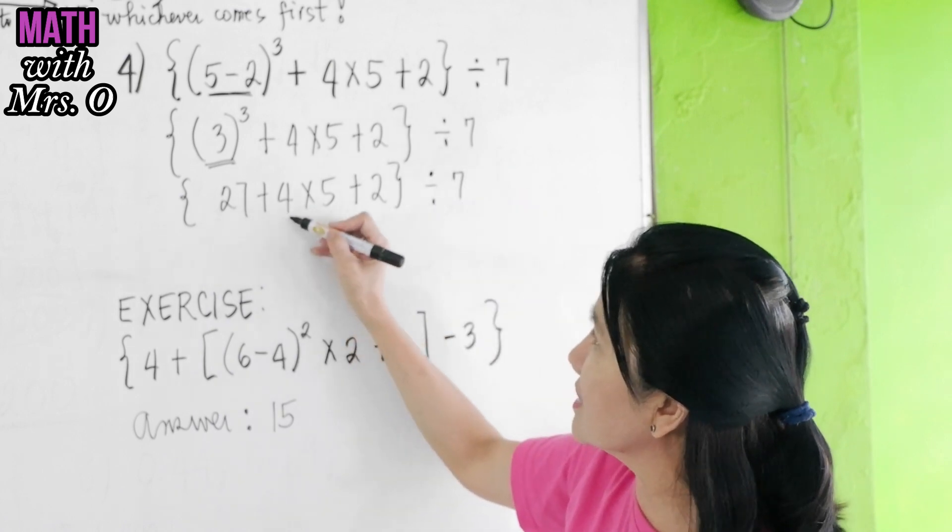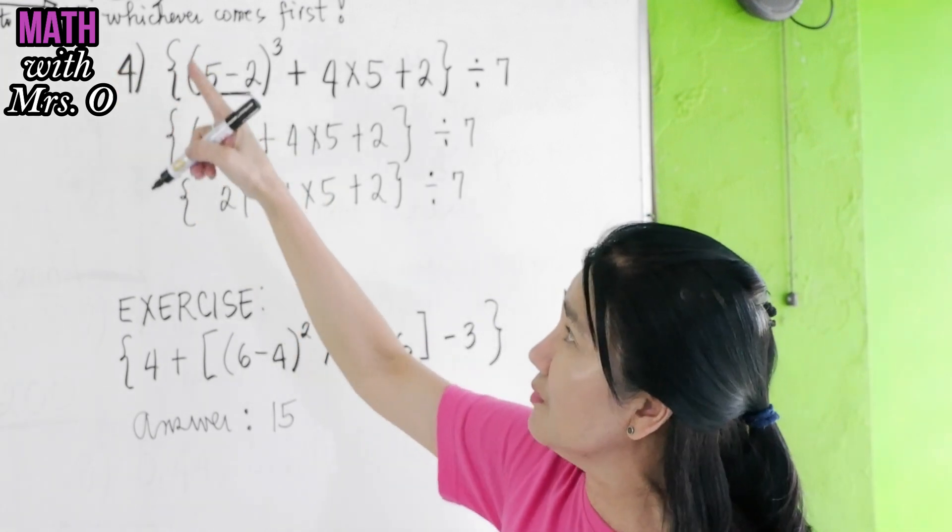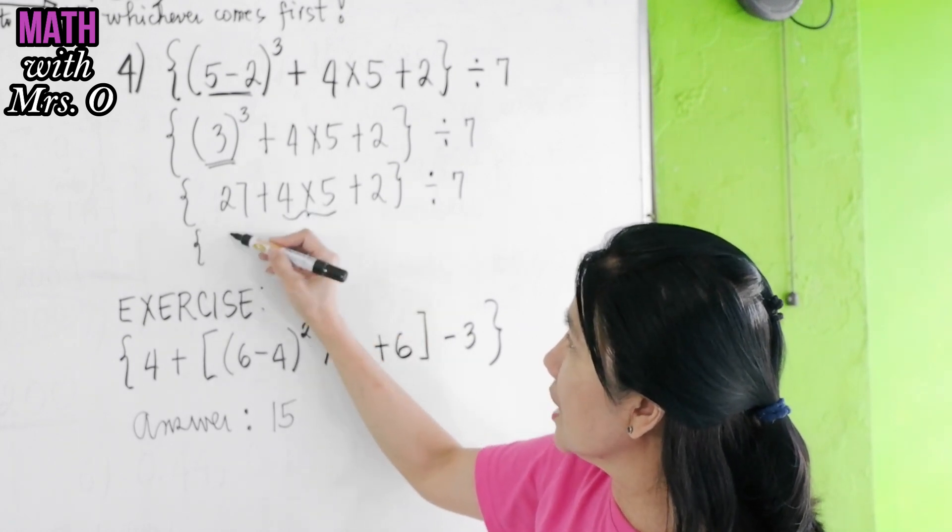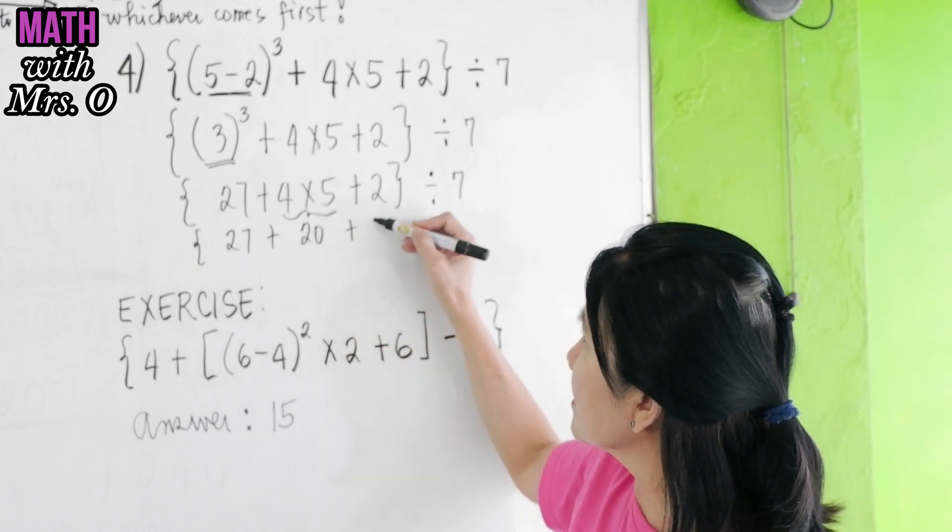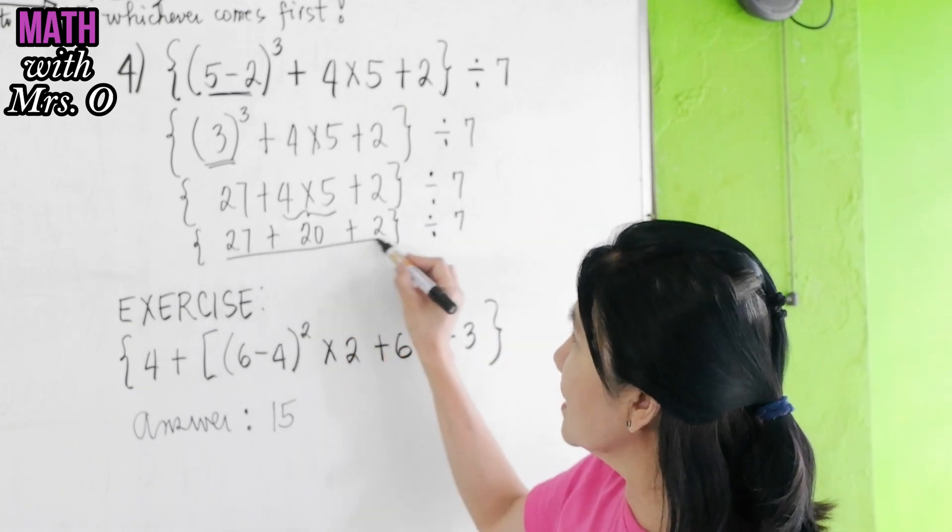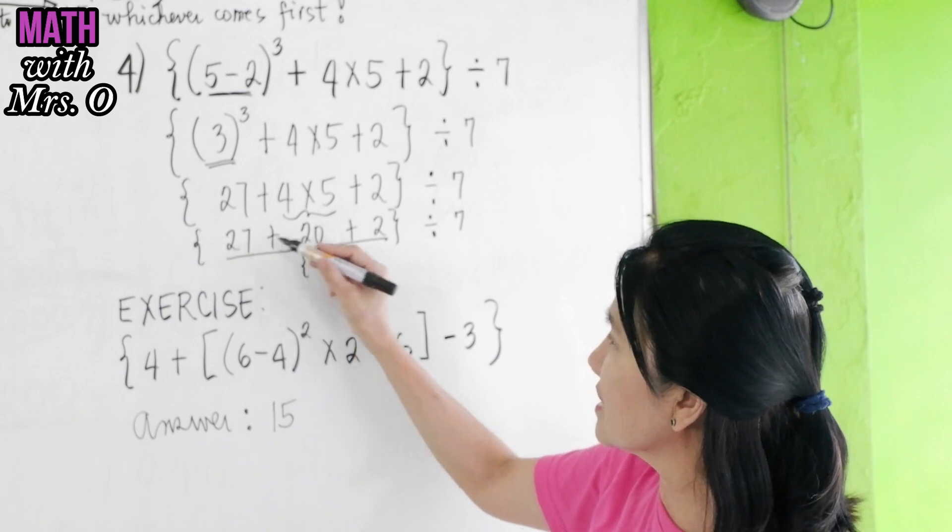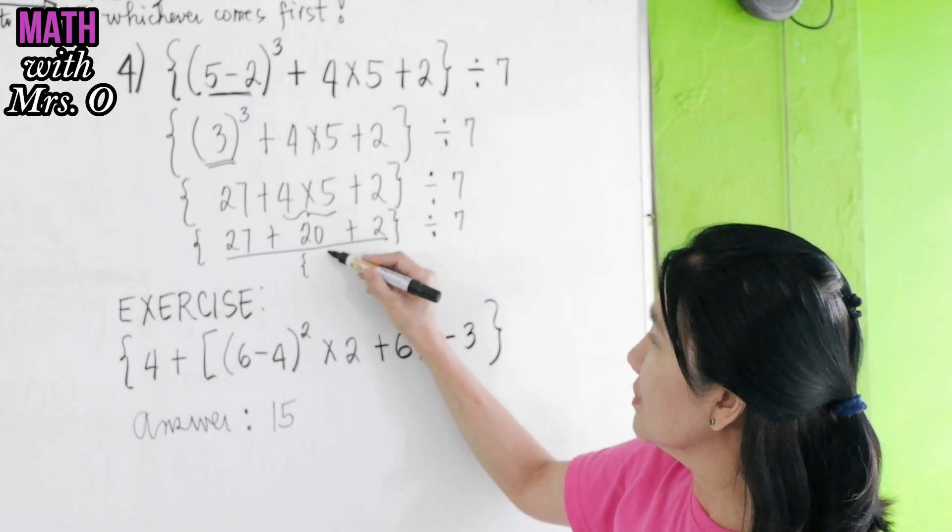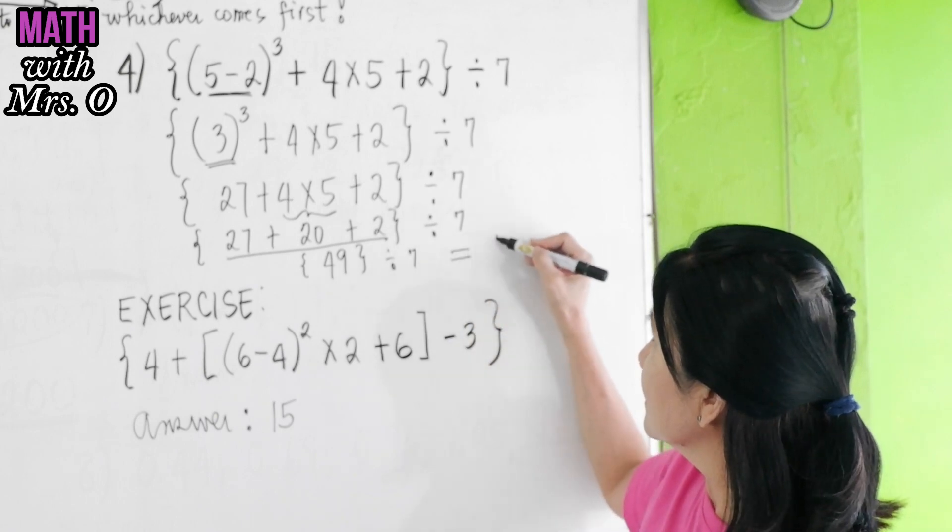Now, what do you do? Do you add 27 + 4? No. PEMDAS from left to right. MD first before AS. So, you have to multiply 4 × 5 first. So, copy 27 + (4 × 5 is 20) + 2. Everything is divided by 7. Then, everything here is addition. So, from left to right, we can add all. So, we have here 27 + 20 is 47 + 2. 49 ÷ 7 is 7.